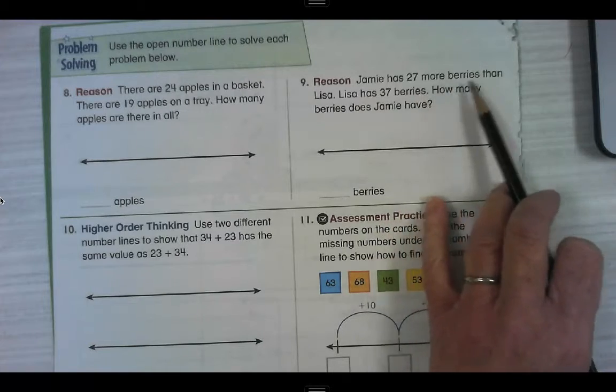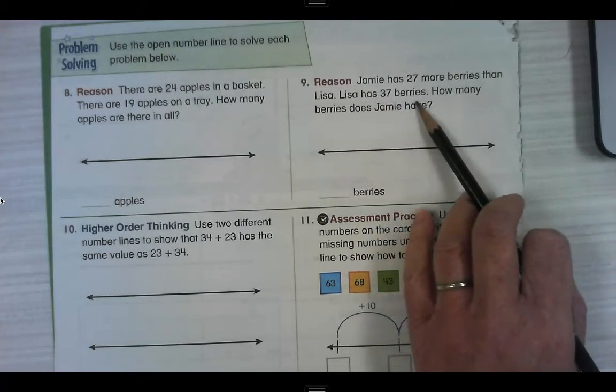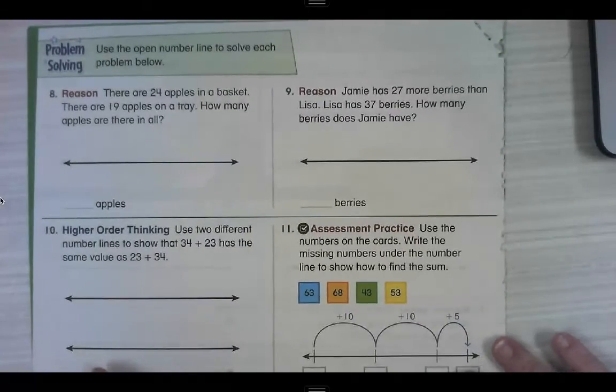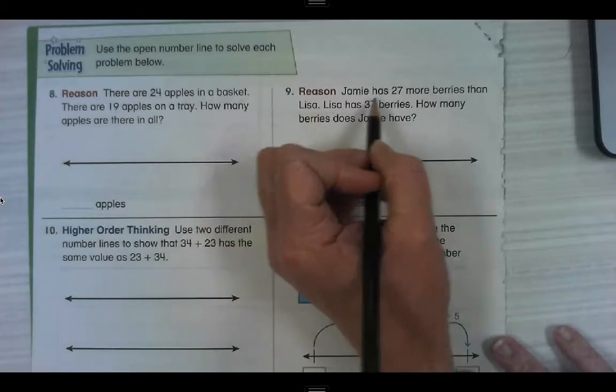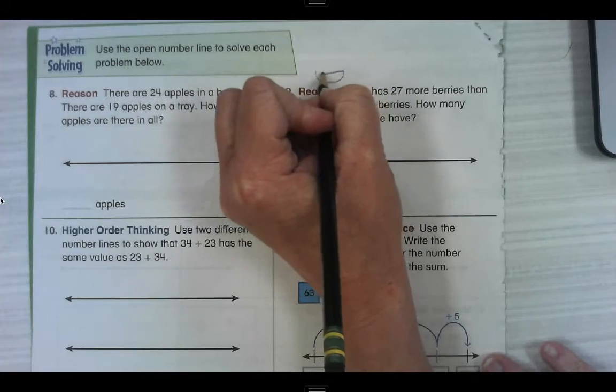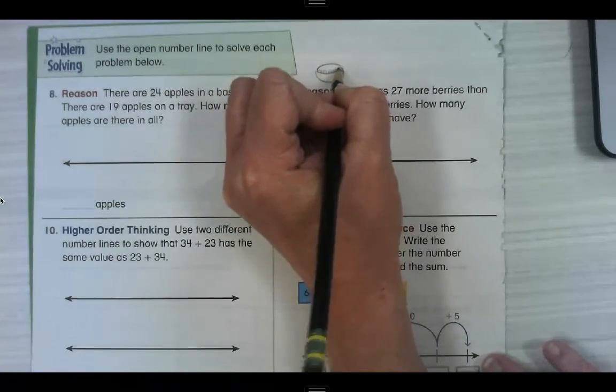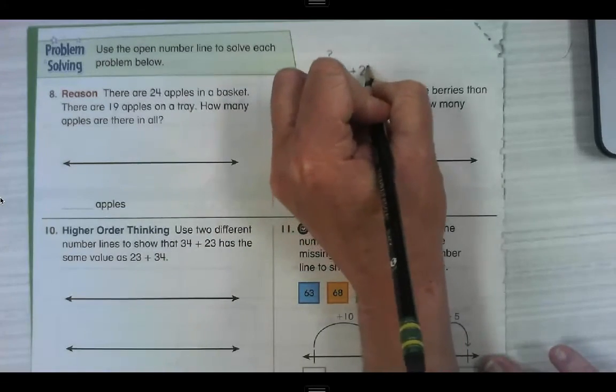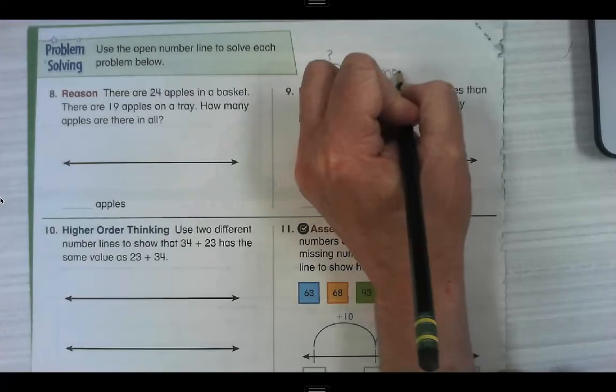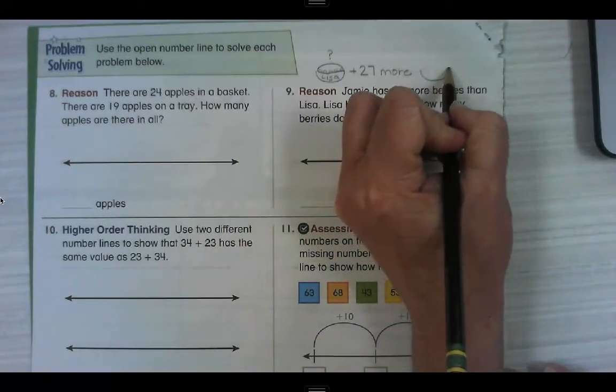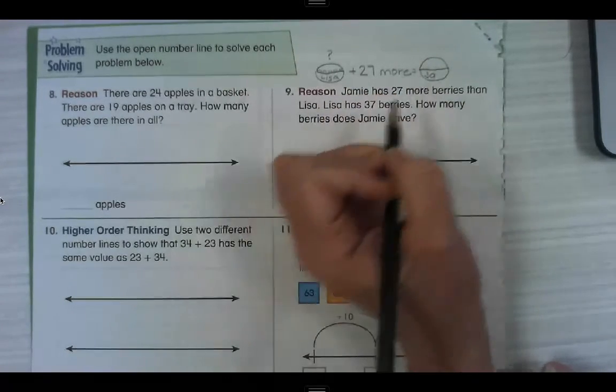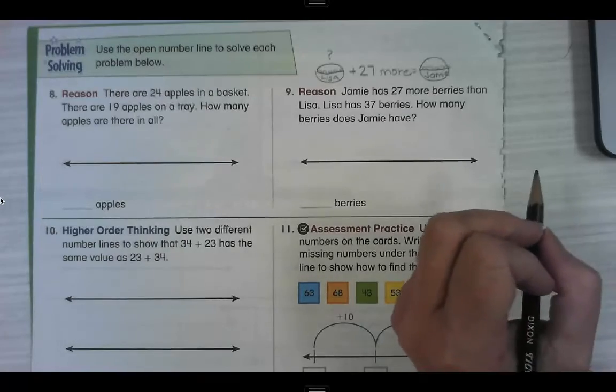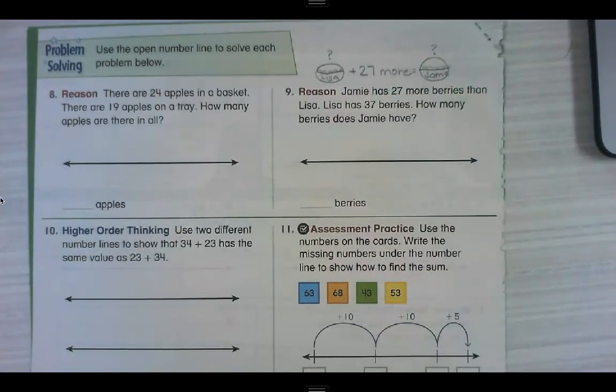Number 9 says, Jamie has 27 more berries than Lisa. Lisa has 37 berries. How many berries does Jamie have? Now that kind of sounds like a comparing problem, which normally is a subtraction problem. But Jamie has 27 more than Lisa. So let's say these are Lisa's berries. They're in this basket. It's not a very good basket. And we don't know how many are in there. This is Lisa's. Jamie has what Lisa has plus 27 more. And that's what's in Jamie's basket. Okay. So if we start here, do you think you could figure this one out? So I know that you can.